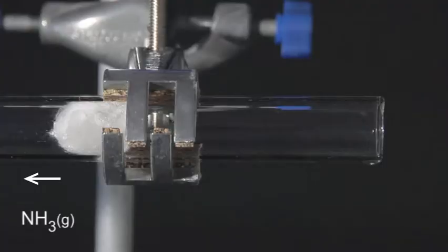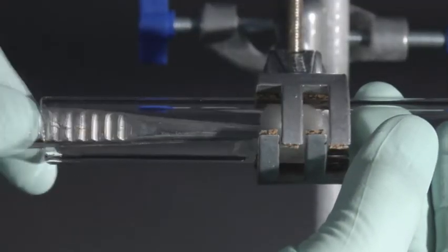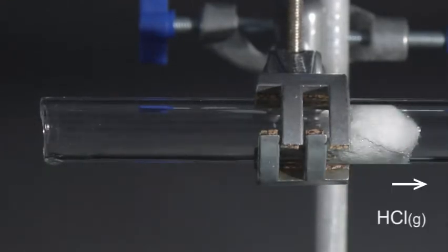The large surface area of the cotton wool allows ammonia and hydrogen chloride vapors to escape into the tube.